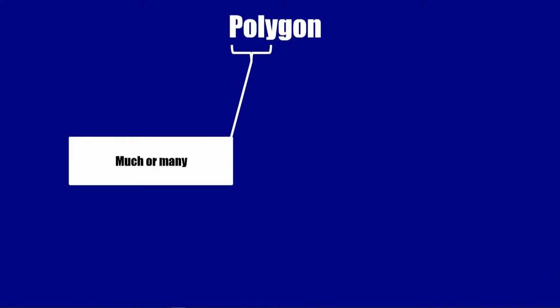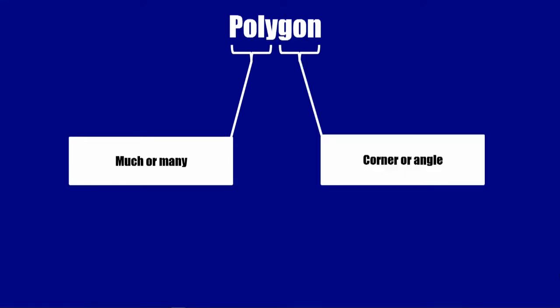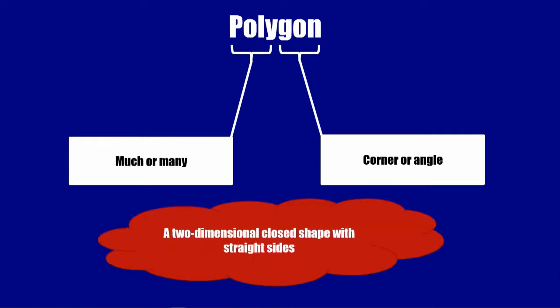The word polygon derives from two Greek words, the first meaning much or many, and the second meaning corner or angle. So a polygon is a two-dimensional closed shape with straight sides.